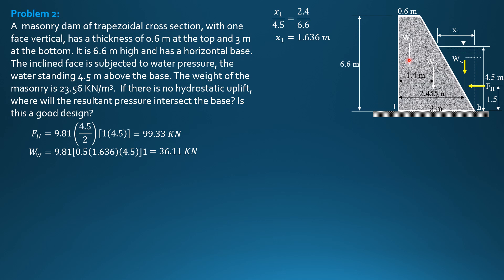Weight 1 is 23.56 times volume 0.6 times 6.6 times 1, which is 93.3 kilonewtons. Weight 2 is 23.56 quantity 0.5 of 2.4 times 6.6 times 1, which is 186.6 kilonewtons. So Ry equals 93.3 plus 186.6 plus 36.11. The sum of vertical forces is Ry, so Ry is 316.01 kilonewtons.